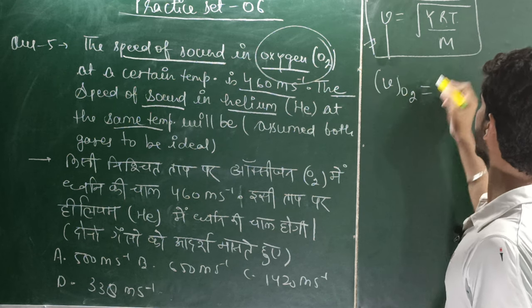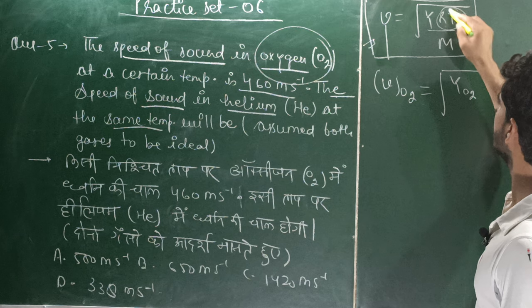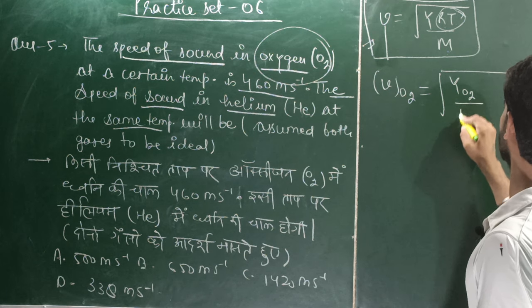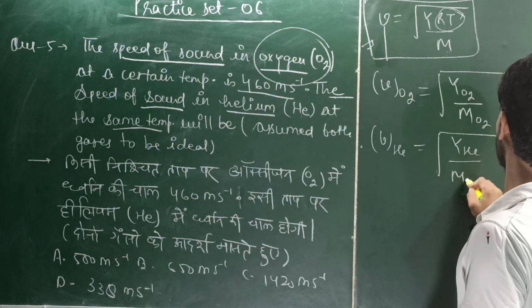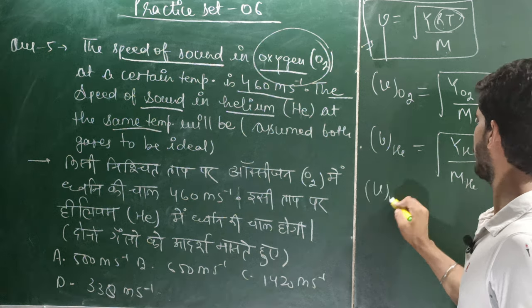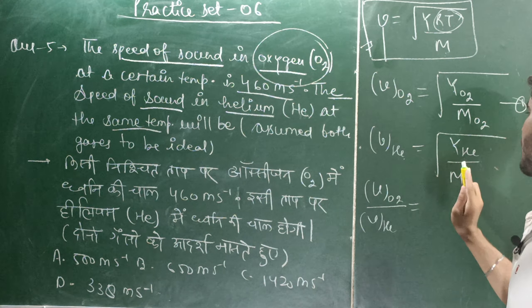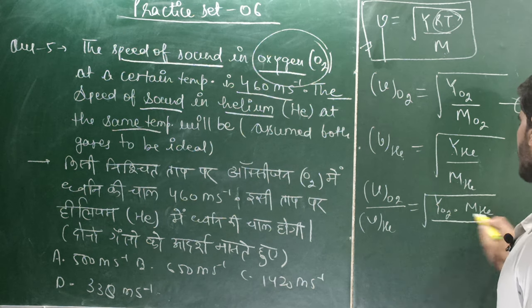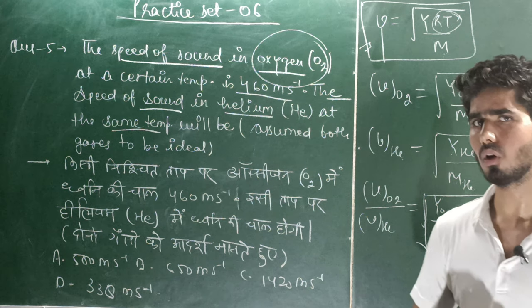Using the formula for speed of sound, I set up the ratio V_O2 / V_He = √(γ_O2 · M_He / γ_He · M_O2). Here, R and T are constants and cancel out. For O2 (diatomic): γ = 7/5, molecular mass M = 32. For He (monatomic): γ = 5/3, molecular mass M = 4.